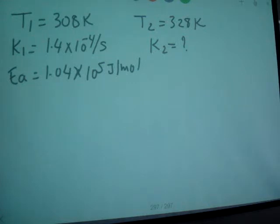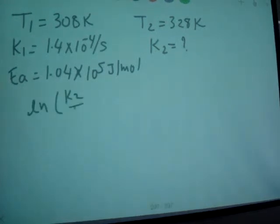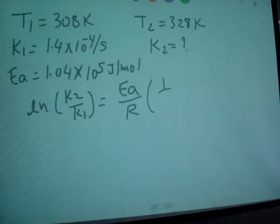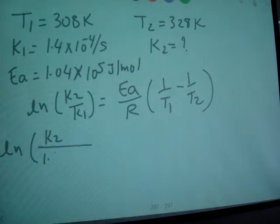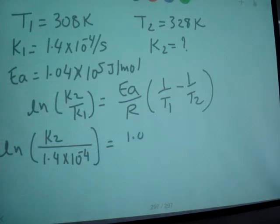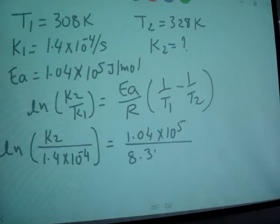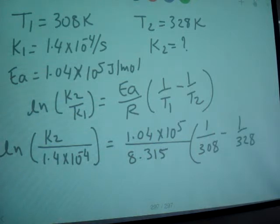And we have this equation. And this time, we need to find out K2, 1 over T1 minus 1 over T2. So let's plug in this value. R value is 8.315, 1 over 308 minus 1 over 328. Alright.